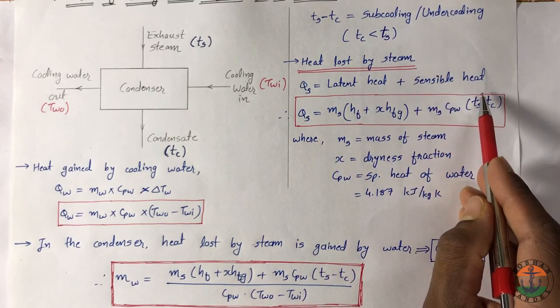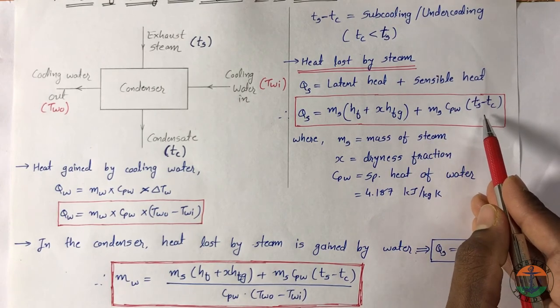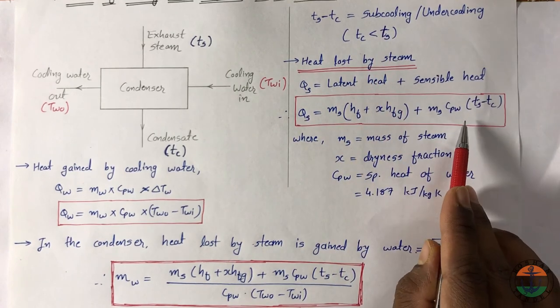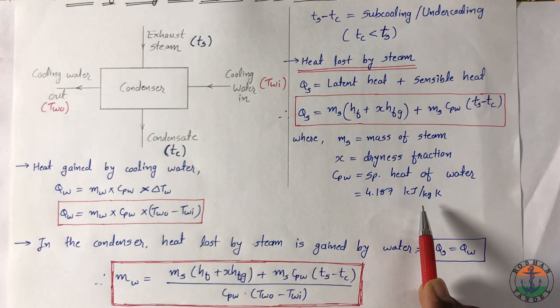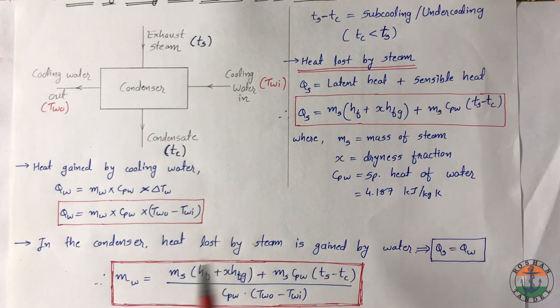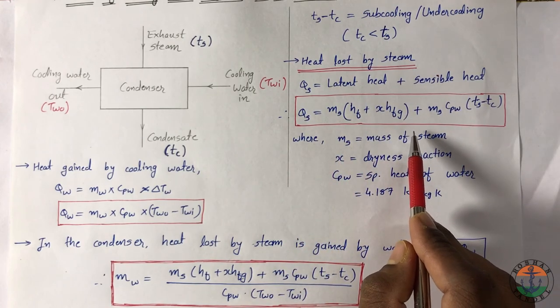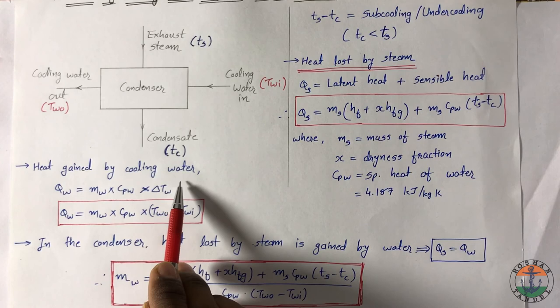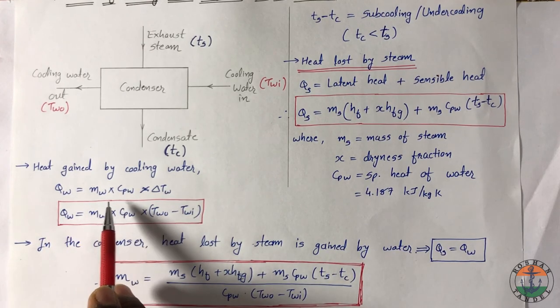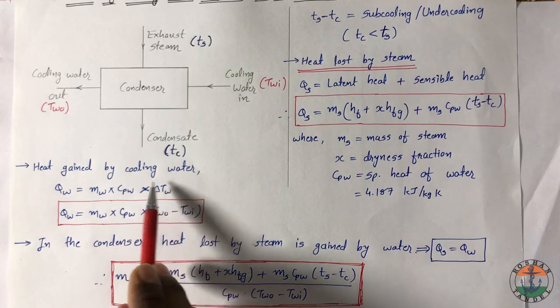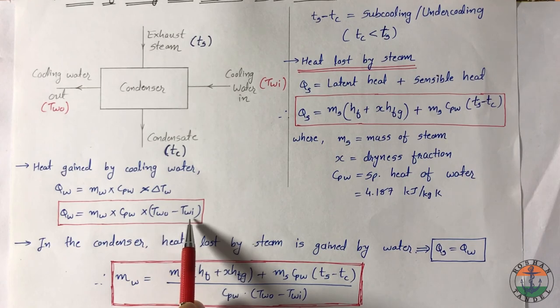Sensible heat is calculated by M Cp into delta T, here delta T you have to take subcooling. Cpw is the specific heat of water which is 4.187 kJ per kg kelvin. This much amount of heat is lost by the steam, which is gained by the cooling water. Heat gained Qw is calculated by M Cp into delta T for water. Delta Tw is equal to Two minus Twi.